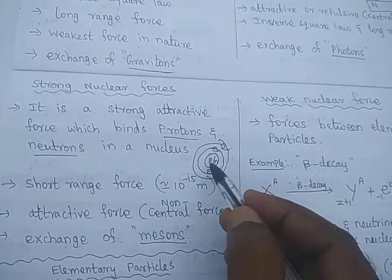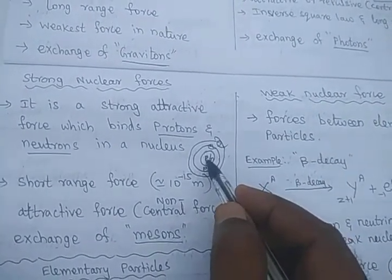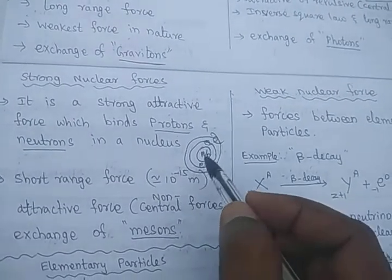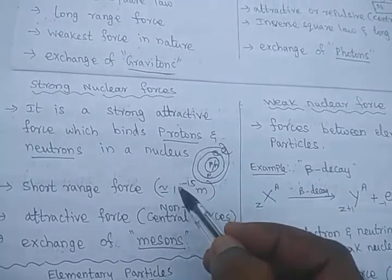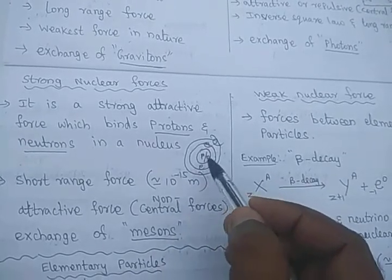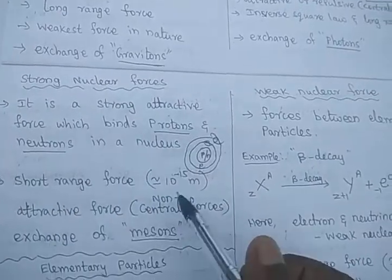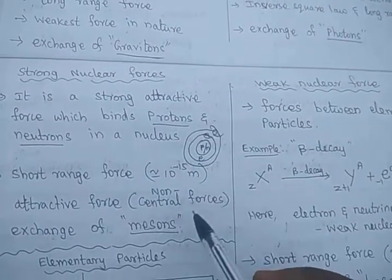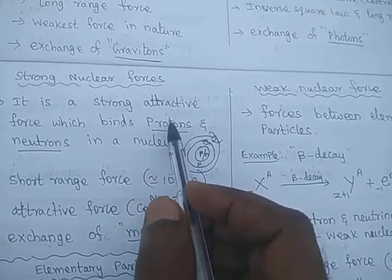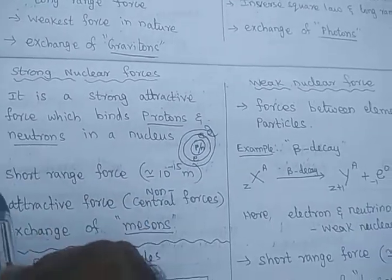The electrons are revolving around the nucleus. Inside the nucleus, there are protons present. So there will be a proton-proton repulsion occurring. That proton-proton repulsion will be overcome by some force called nuclear force. Inside the nucleus, the proton is a positive charge and the neutron has zero charge — that is a neutral charge.